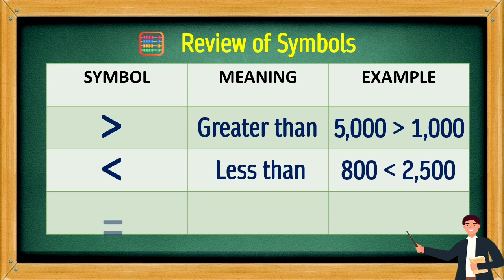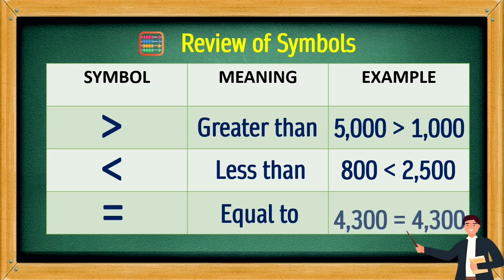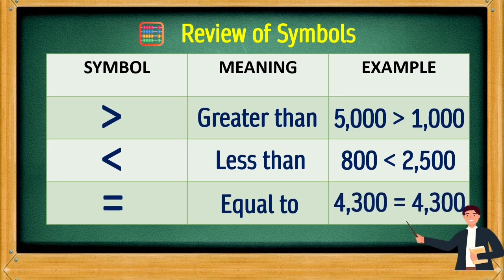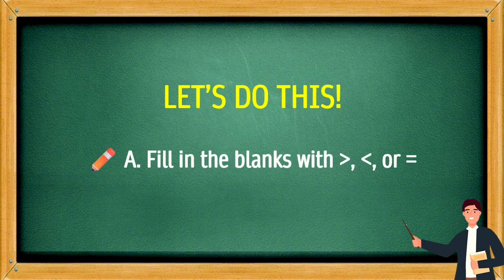The symbol '=' means equal to. For example, 4,300 equals 4,300. Let's do this!